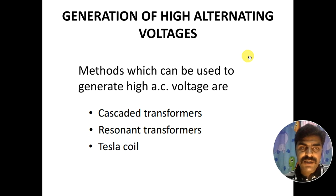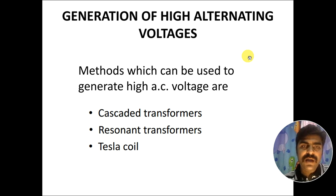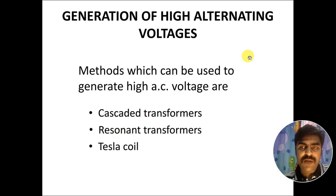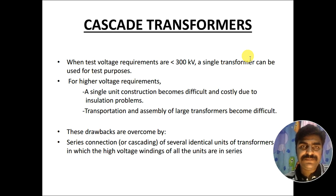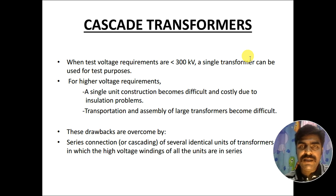There are three methods used to generate high AC voltage: cascaded transformers, resonant transformers, and Tesla coil. In this video I will discuss about the cascaded transformers, and in the upcoming two videos I will discuss about the resonant transformers and Tesla coil. When test voltage requirements are less than 300 kV, a single transformer can be used for testing purposes — meaning a single transformer can generate up to 300 kV.